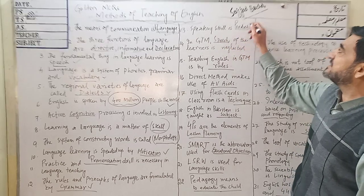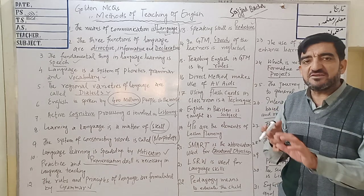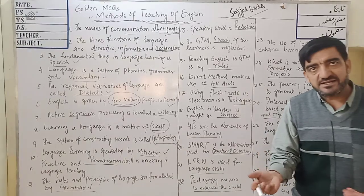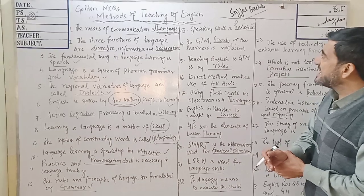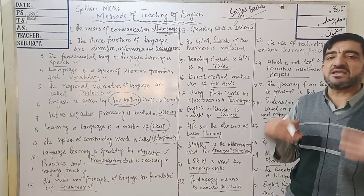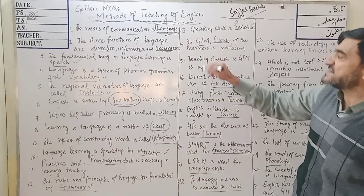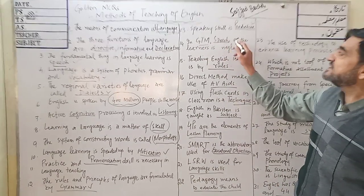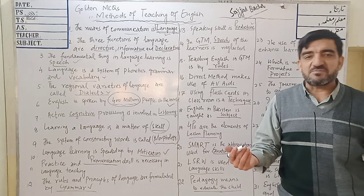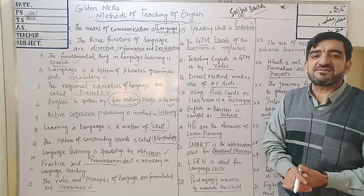MCQ 13: Speaking skill is productive. There are four language skills: Listening, Speaking, Reading, and Writing (LSRW). Out of these, two are taken as productive and two as receptive. Receptive skills are when we intake something, and productive skills are when we produce something. MCQ 14: In the Grammar Translation Method (GTM), speech of the learner is neglected. GTM is teacher-centered — the teacher performs all activities and communicates, but the students remain passive in response.